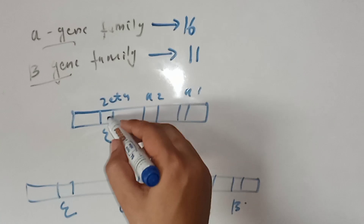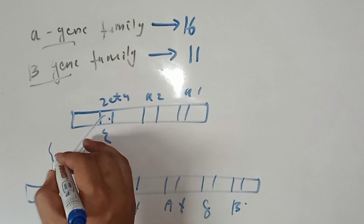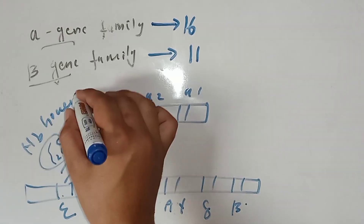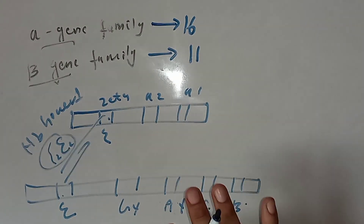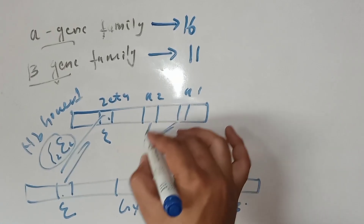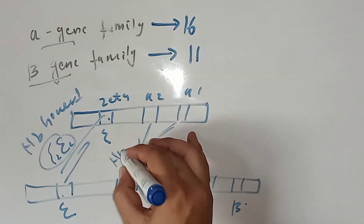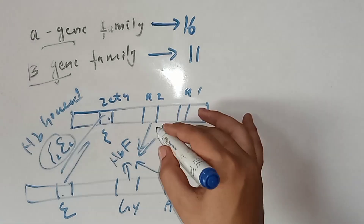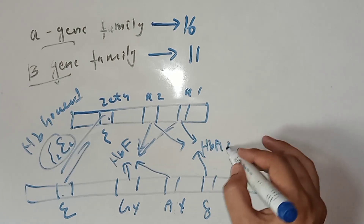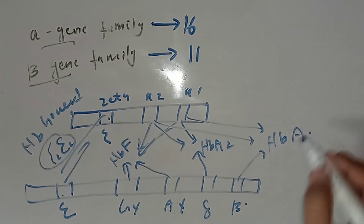The zeta and epsilon genes are expressed in the early embryonic life and they produce Hb Gower 1 hemoglobin. The alpha gene products and gamma gene products join to produce fetal hemoglobin, HbF. The alpha gene and delta gene join to produce HbA2, and the alpha gene and beta gene join to produce HbA.